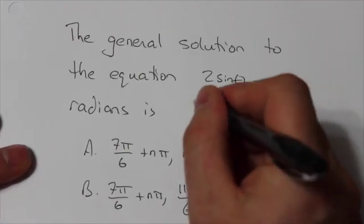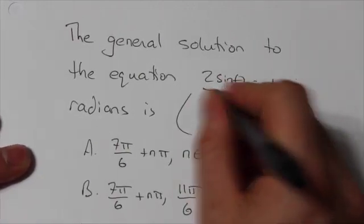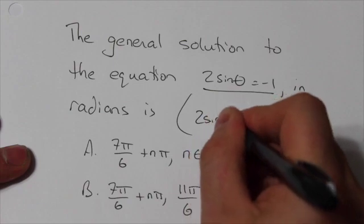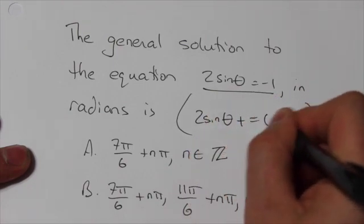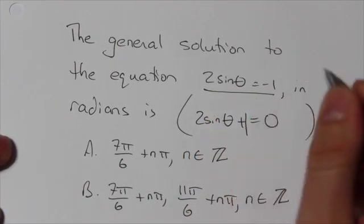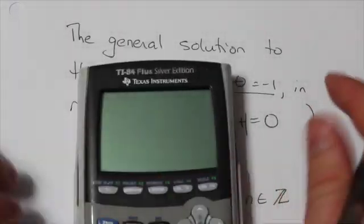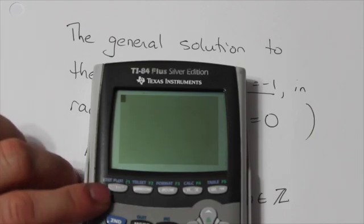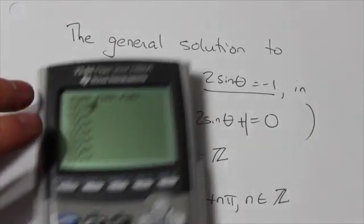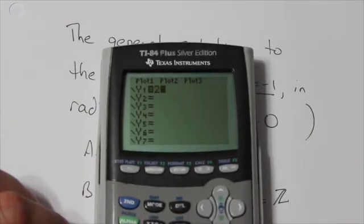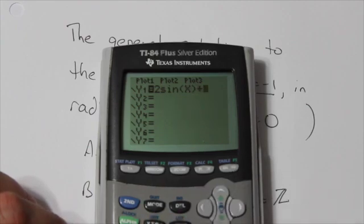The first thing that I'm going to do is take this equation and bring everything over to one side, then I'm going to enter it into the calculator in my y equals. So, y equals 2 sine of x, close brackets, plus 1.